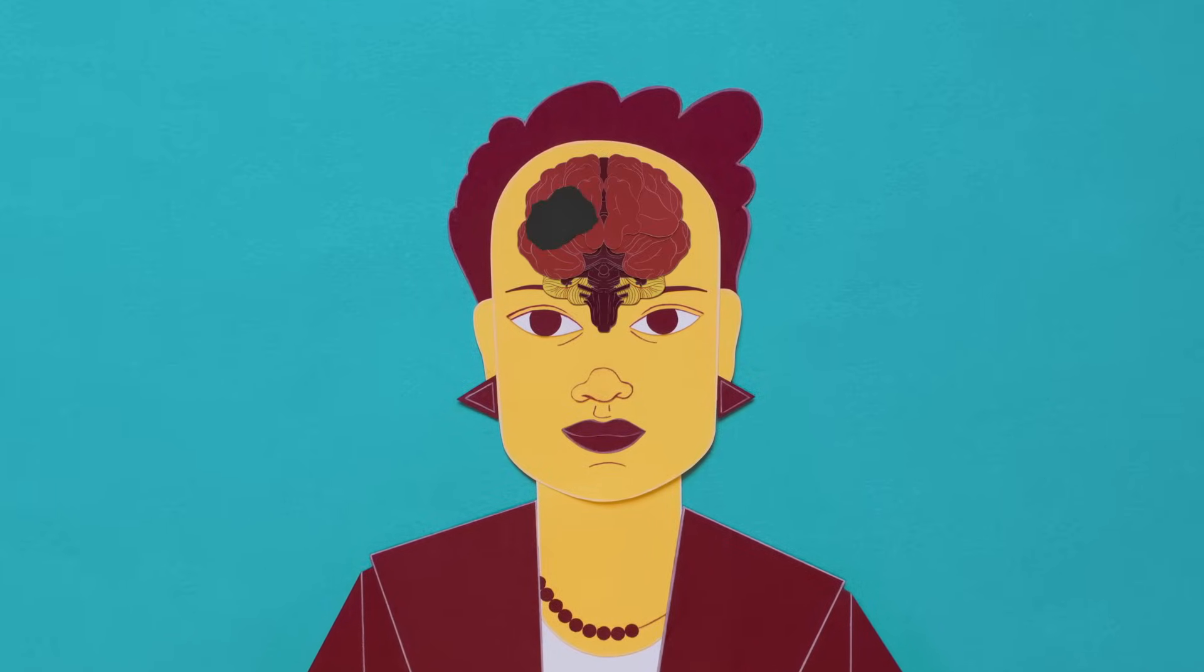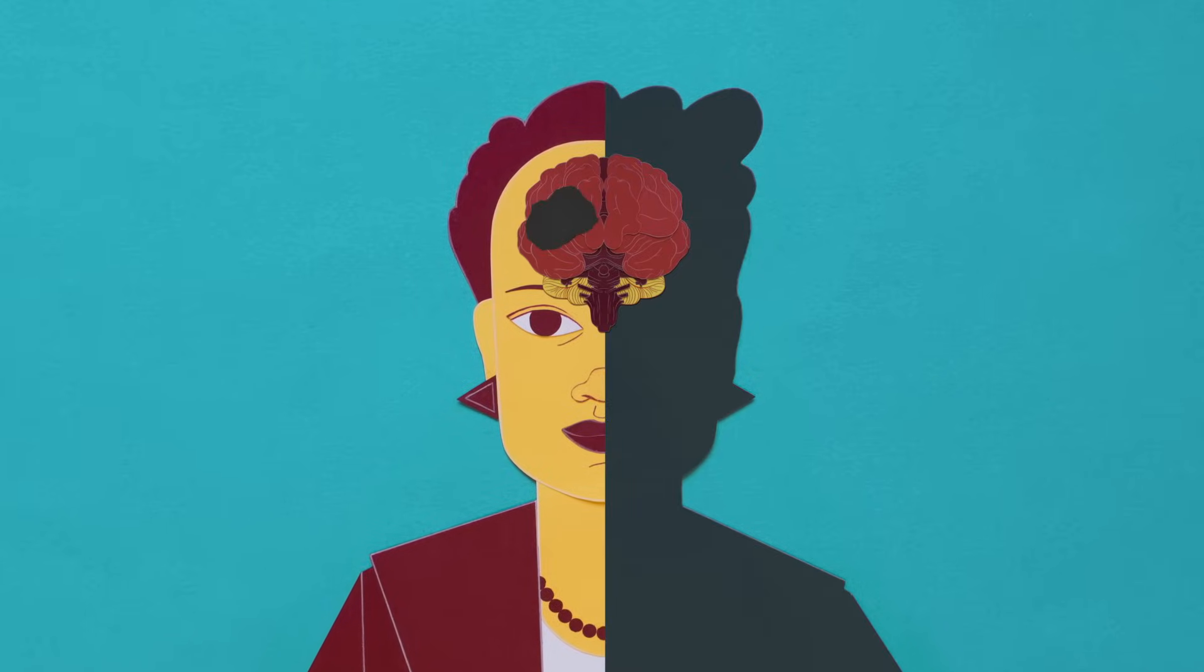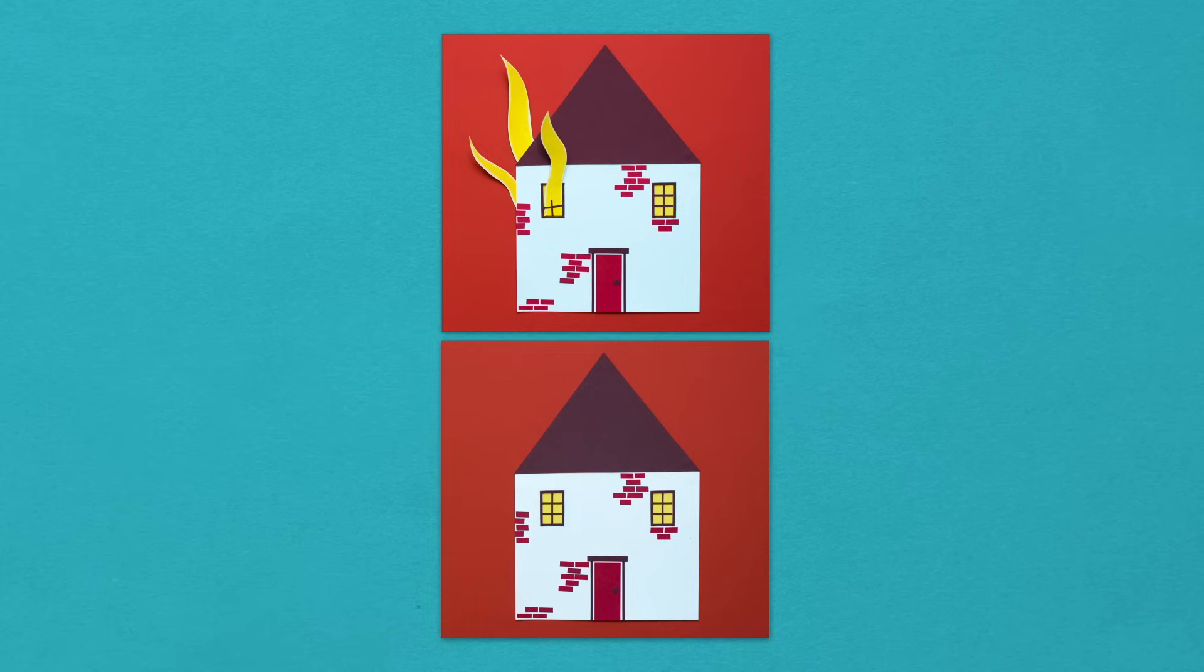P.S. had suffered a stroke that damaged the right side of her brain, leaving her unaware of everything on her left side. But though she could discern no difference between the houses, when researchers asked her which she would prefer to live in, she chose the house that wasn't burning.